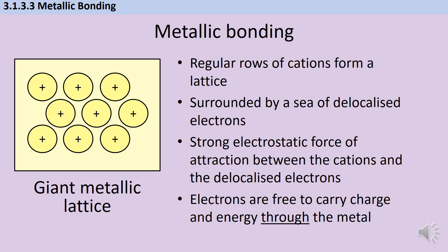There's a strong electrostatic force of attraction, which is what we call that force when we have positive things and negative things attracted together. And that's going to act between those positive cations and the negative delocalised electrons. Those electrons are now free to move and as they do so, they can carry charge and energy through the metal. And this is what's going to allow metals to conduct electricity.